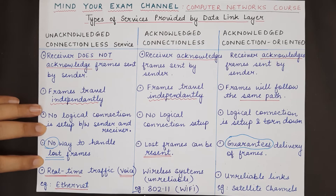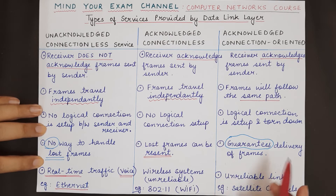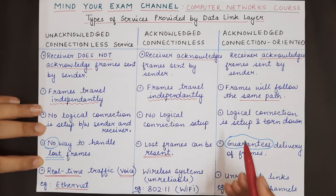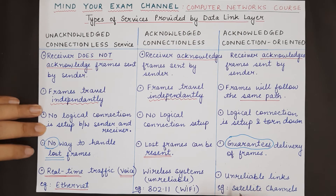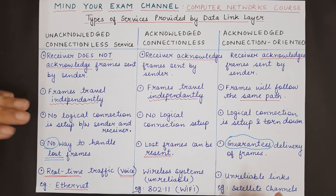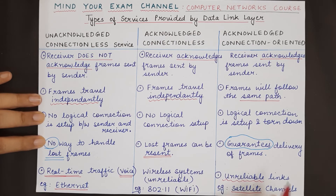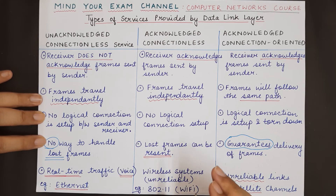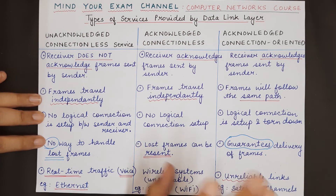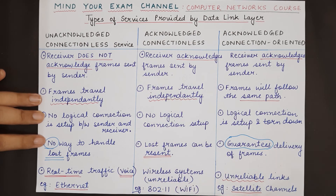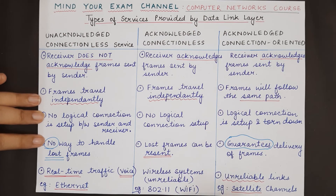Acknowledged connectionless service is used in unreliable channels like wireless systems — for example, Wi-Fi following the 802.11 standard. Acknowledged connection-oriented service is used for long-distance unreliable links like satellite links, where it can be guaranteed that frames will reach the receiver and there is proper communication and feedback from the receiver.